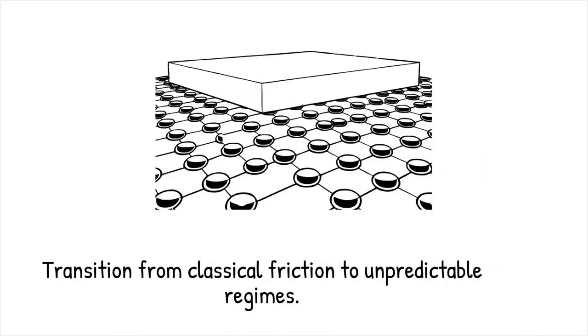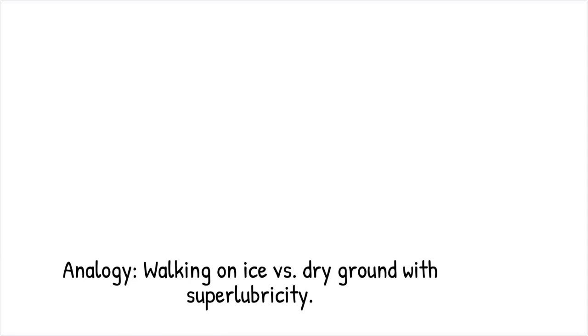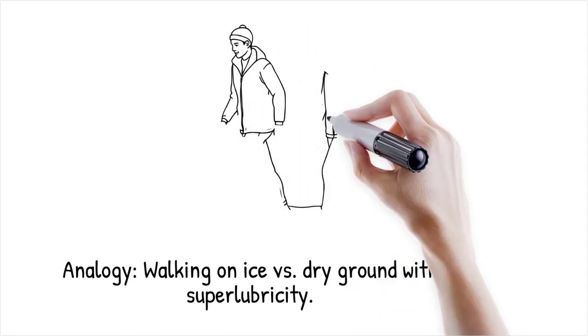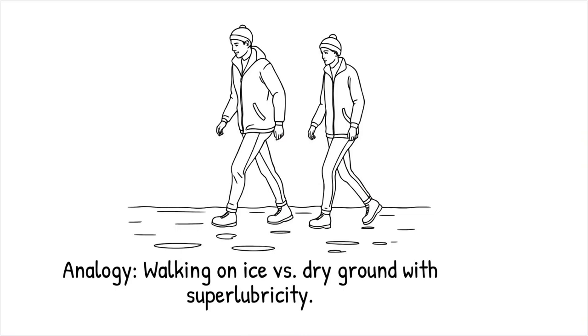At the nanoscale, materials like graphene exhibit near-zero friction, or superlubricity, when sliding past each other due to the lack of interlocking surface asperities. This is similar to walking on ice versus walking on dry ground. While classical friction applies to rough surfaces, extremely smooth or structured surfaces can behave counterintuitively.